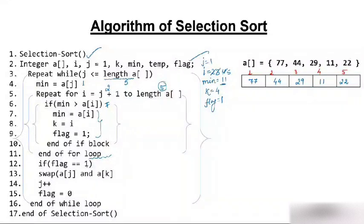Is flag equal to 1? No — flag is not 1. Because 29 was minimum and it remained minimum, we do not swap. We increment j to 4 and reset flag to 0. Is 4 less than 5? Yes. We set minimum = a[4] = 77. We start from i = 5, going till 5 — only one iteration.